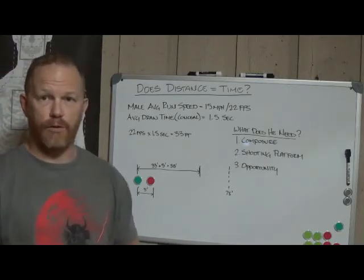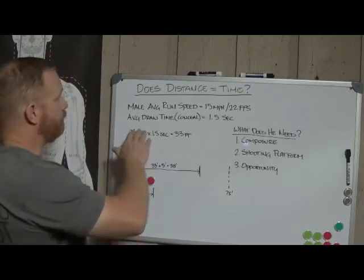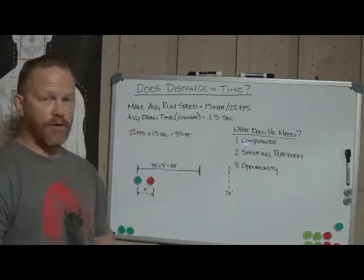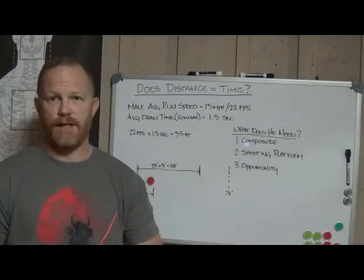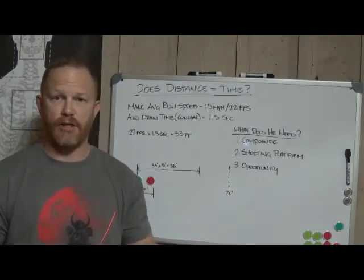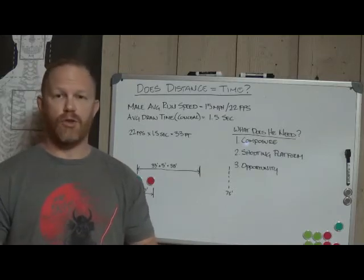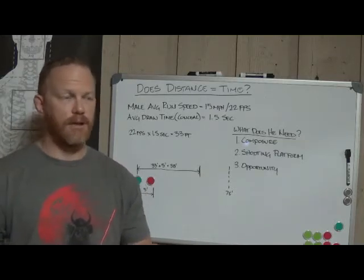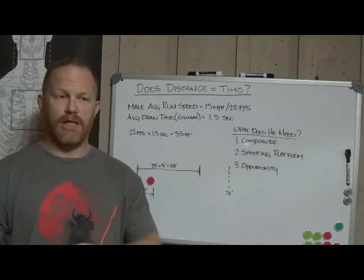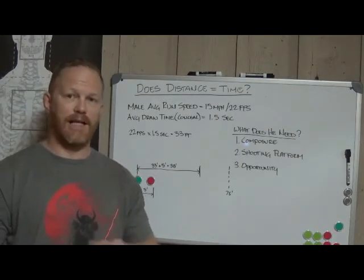The average draw time from concealment—so if you're in a situation where you're within five feet of an individual and it looks like it's going to escalate and this individual goes to pull his garment and access his weapon—on average it takes somebody cold a second and a half to be able to draw from concealment and get that first shot off.